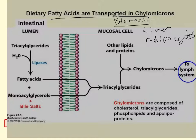As you can see in this figure, triglycerides are acted on by lipases. These are broken down into usually two fatty acids and one monoacylglycerol, which is absorbed into the intestinal cells, and then recombined into triacylglycerols. Other lipids and proteins are combined with that to form a chylomicron.